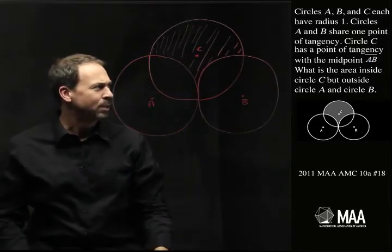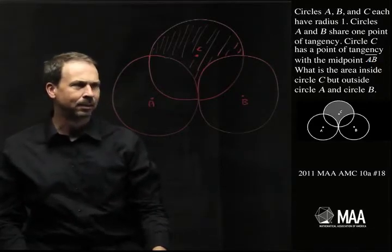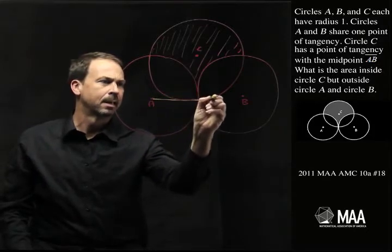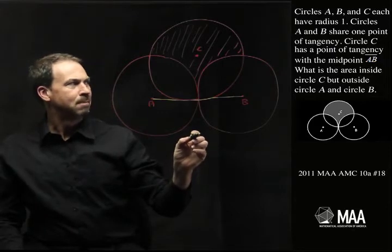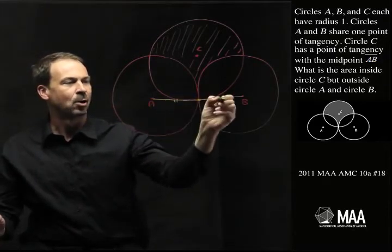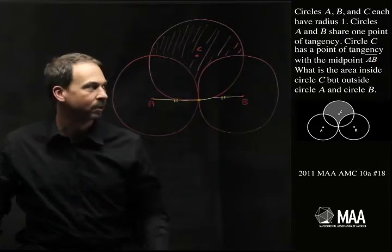Circle C has a point of tangency with the midpoint of the line segment AB. Alright, what does that mean? So I have to draw the line segment AB. Oops, a little bit wonky. It has a point of tangency with the midpoint, so the midpoint where it just touches must be the midpoint of the segment AB. I'm just trying to understand the question, draw some details on the picture.